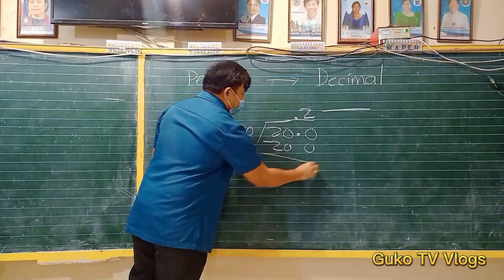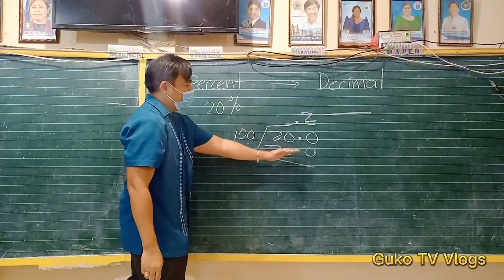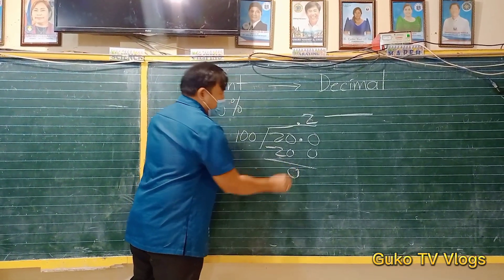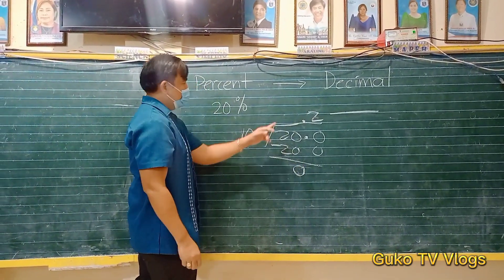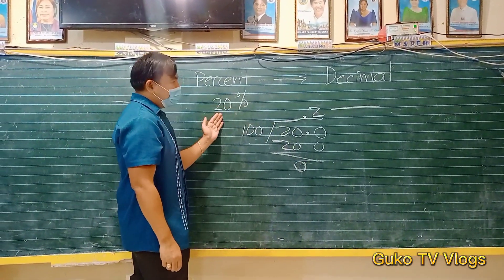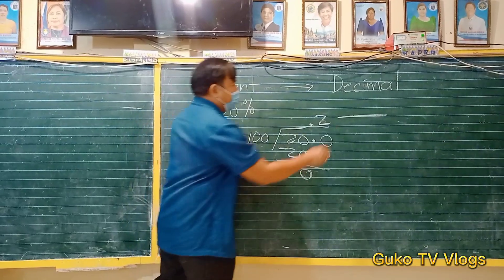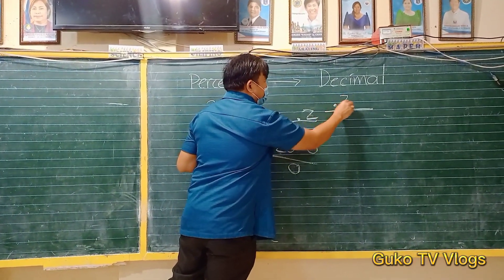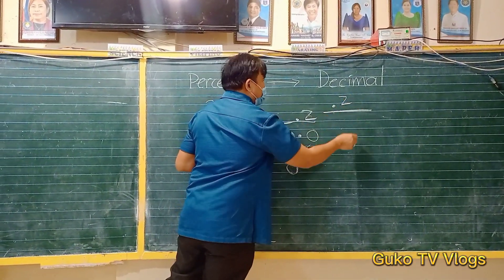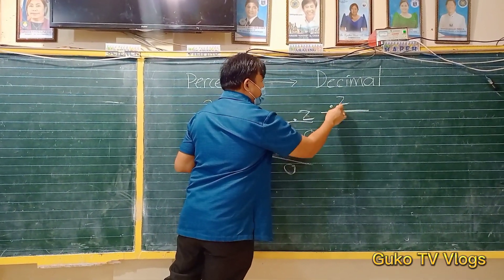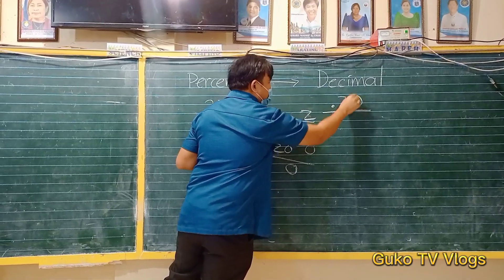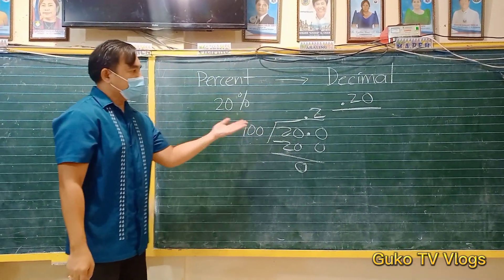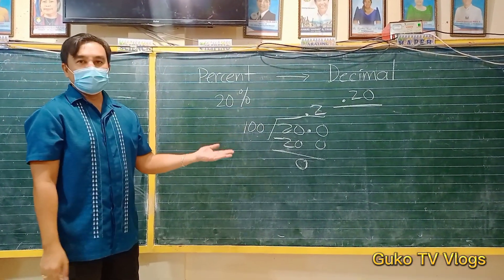So subtract: 200 minus 200 is 0. So 20 percent will now become 0.2, or that is 0.20. 0.2 and 0.20 are the same.